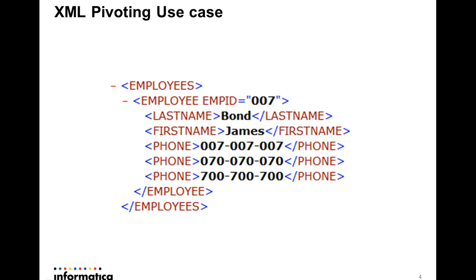Consider this XML file where the root element is 'employees', which contains a multiple-occurring element 'employee'. Each employee consists of a last name, first name, and a multiple-occurring element called 'phone'. When fitting this data into a relational database table, the common design stores a single record per employee, so it would be convenient to read the data as a single record instead of three separate records for different phone numbers.